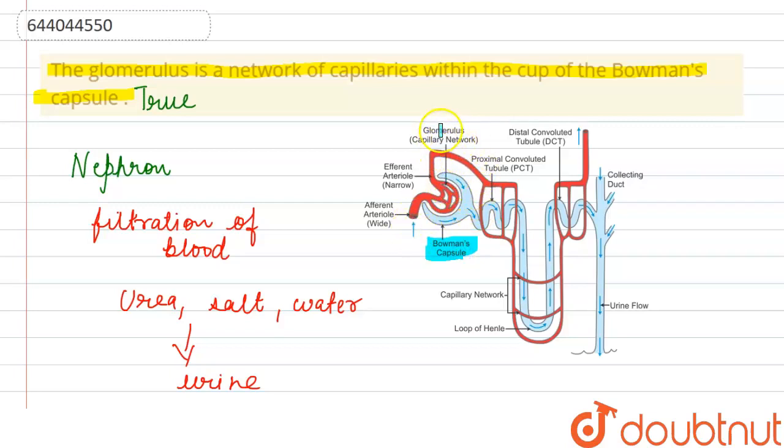The blood is entering through the afferent arteriole and leaves the Bowman's capsule through the efferent arteriole. Inside the glomerulus, there will be the ultrafiltration of the blood.